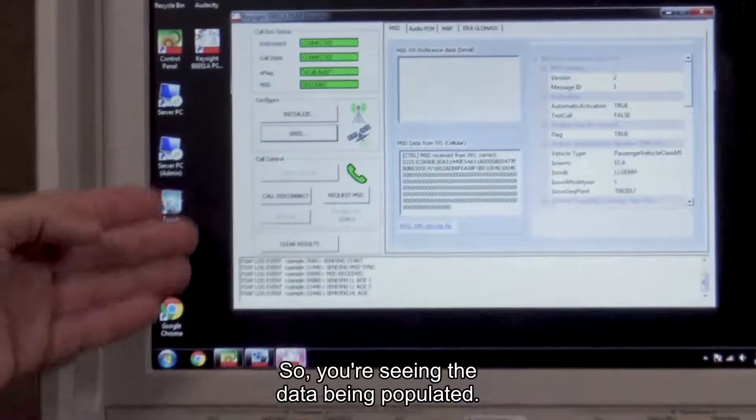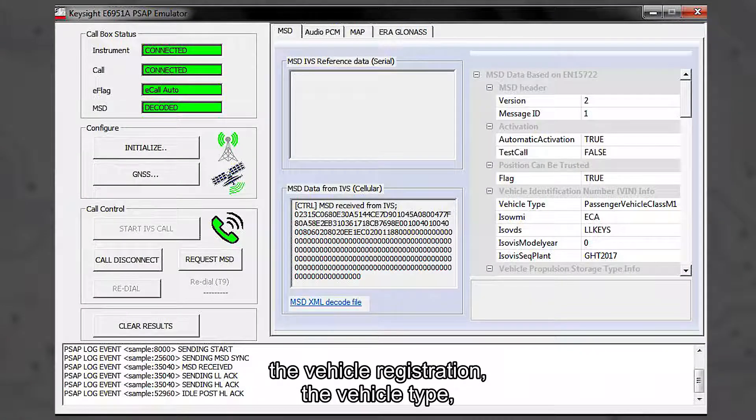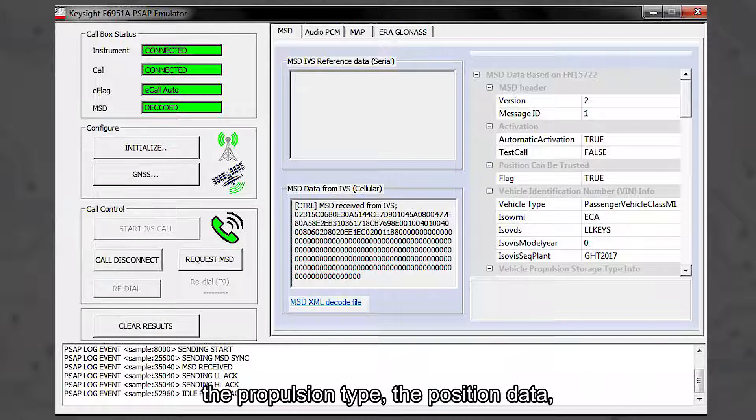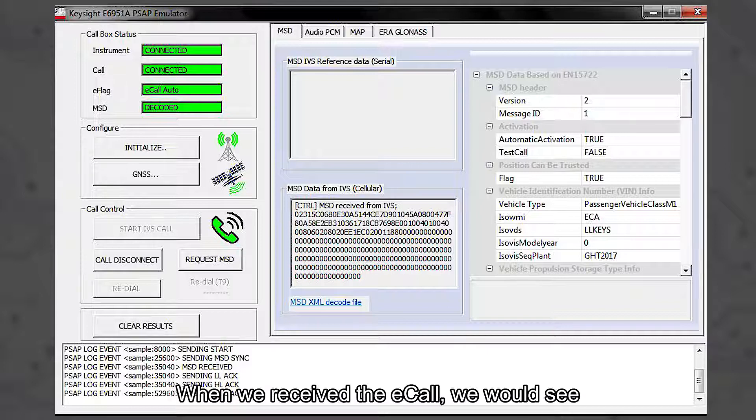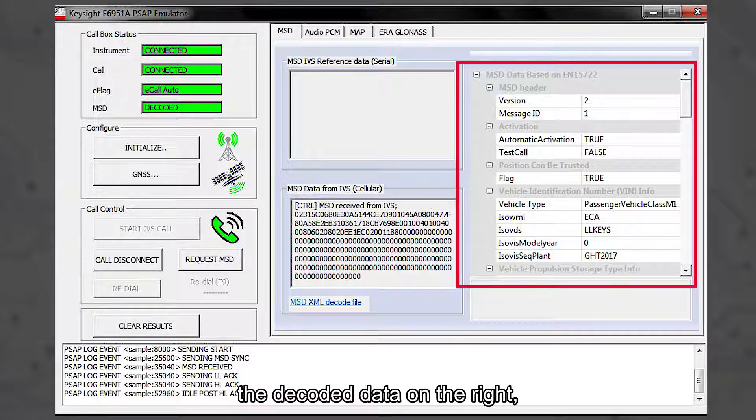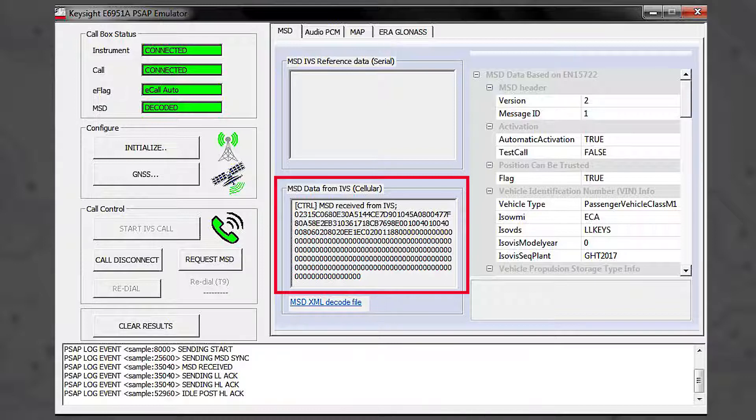So you've seen the data being populated. The minimum set of data contains data like the vehicle registration, the vehicle type, the propulsion type, the position data and time of the incident. When we received the eCall we will see the decoded data on the right and here on the left we see the directly unencoded data.